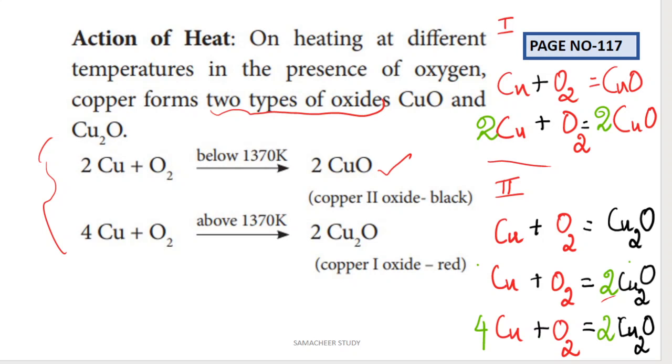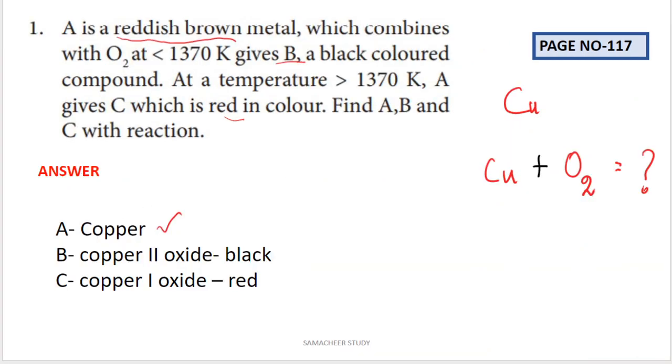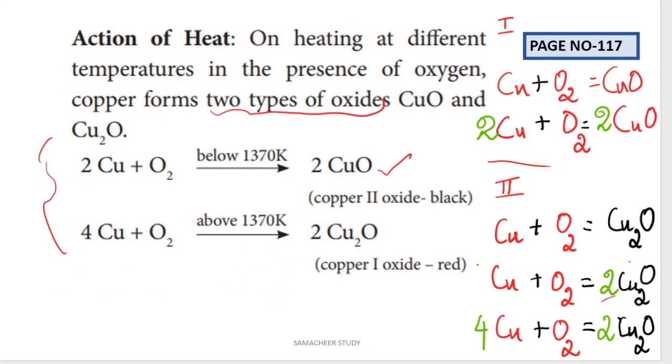In the answer: A is copper, B is copper 2 oxide black in color, C is copper 1 oxide red in color. That means these two expressions. This is the answer.